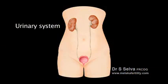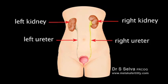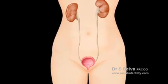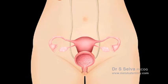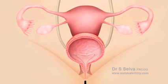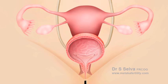This diagram shows the urinary system. The ureters connect the kidneys to the urinary bladder. The ureters are found behind the peritoneum on the pelvic side walls. They run below the ovaries and on the side of the cervix, under the uterine arteries, before entering the bladder via the ureteric tunnel. Ureters are important structures to identify during gynecological surgeries.